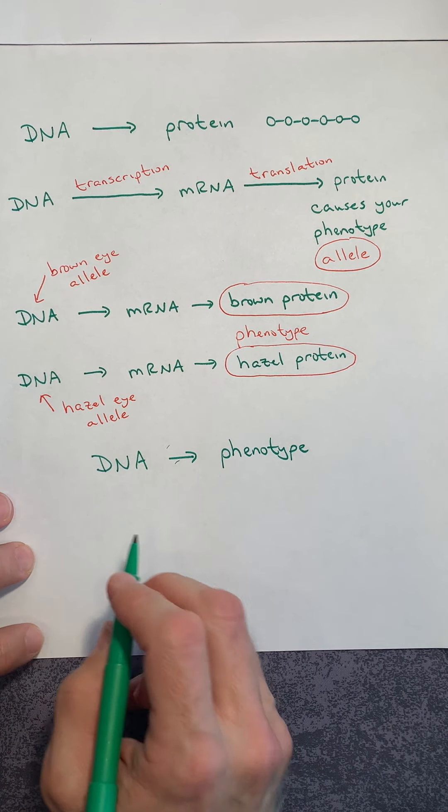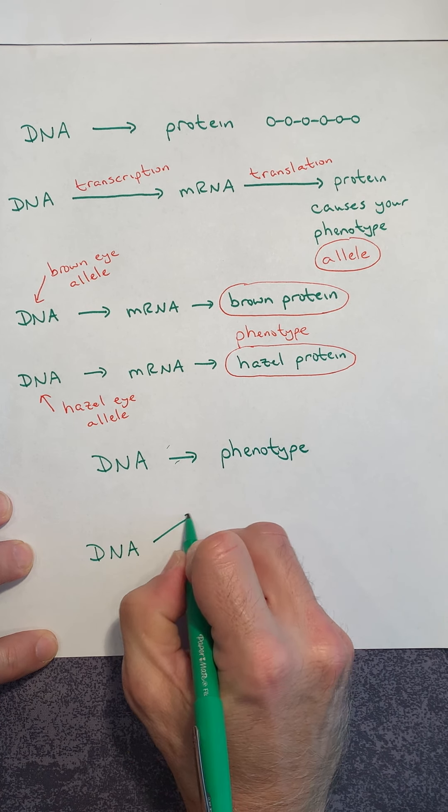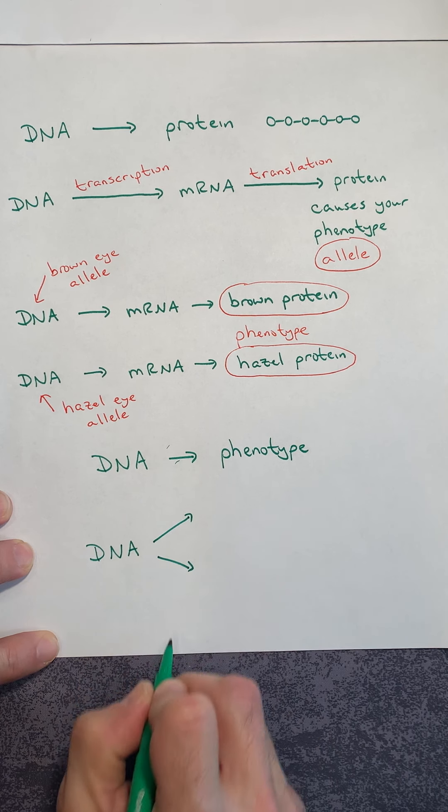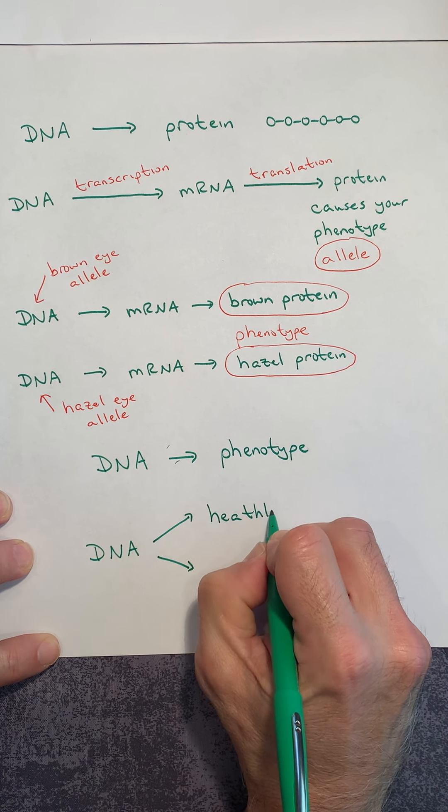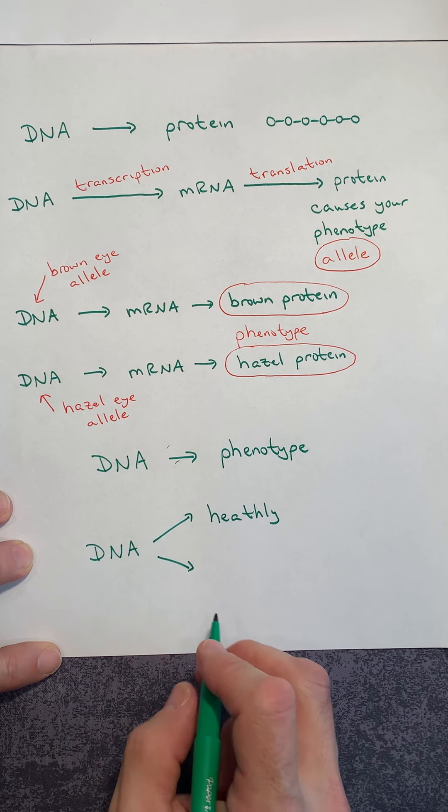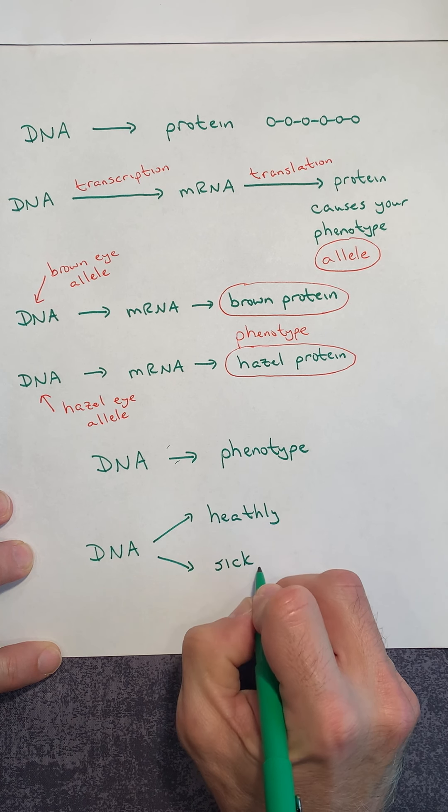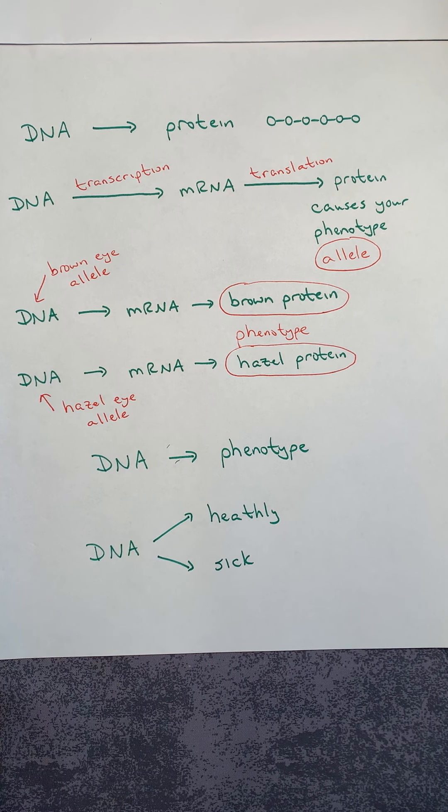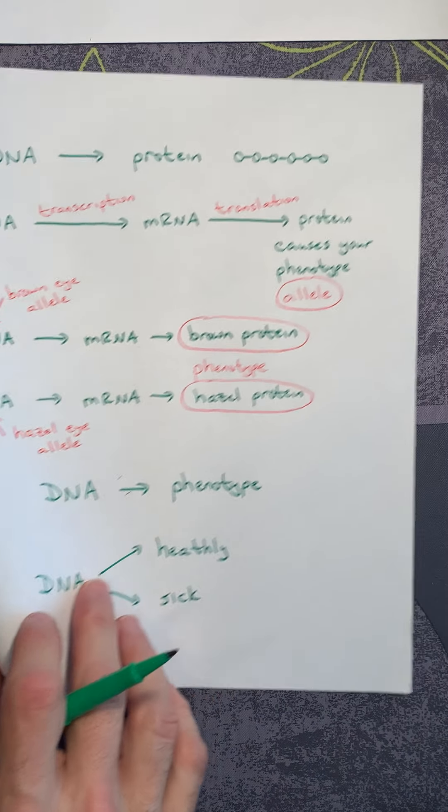So when we look at this genetics problem set, we're not looking at eye color though. We're looking at something more serious. We're looking at the fact that, did you receive DNA that allows you to be healthy? Or is it possible for someone to receive DNA where they are sick? Whether you're talking about cystic fibrosis or Tay-Sachs. And this gets really serious. So now that you have some background, let's take a look at the problem.